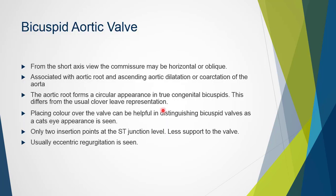With bicuspid aortic valves, from the short axis view the commissure may be horizontal, oblique, or vertical. Typically we see aortic root and ascending aorta dilatation, and there is a higher incidence of coarctation of the aorta. The aortic root forms a circular appearance in true congenital bicuspid valves, differing from the usual cloverleaf representation. Placing colour over the valve may help distinguish bicuspid valves, as a cat's eye appearance is seen with colour flow — particularly useful when the leaflet commissure is not easily seen.